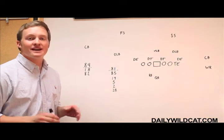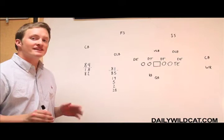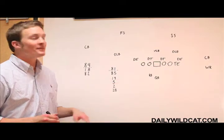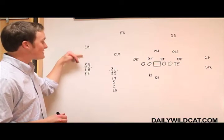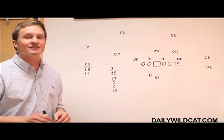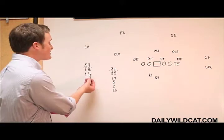The first type of screen we'll look at is called the quick screen. What this is, is an audible at the line of scrimmage. If the quarterback Nick Foles sees that the cornerback is off the line of scrimmage like you'll see here, he'll check out of the current play, whether it's a run or a pass, and throw a quick screen to the split end.